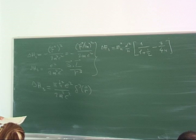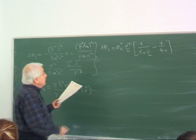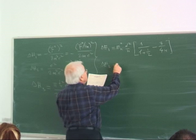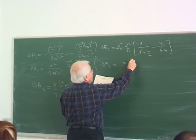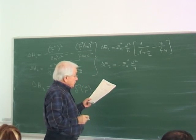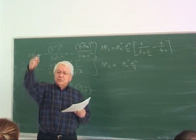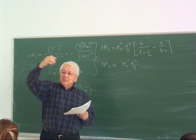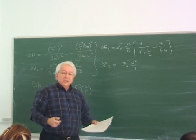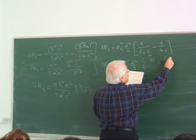Delta E1 is E_n0 times alpha squared over n, times the bracket: 1 over (L + 1/2) minus 3/4N. Remember the original complicated form — it was remarkable that we could reduce it to that very nice form. E_n0 is the energy eigenvalue of the Coulomb Hamiltonian. And delta E2 we computed to be E_n0 times alpha squared over n.